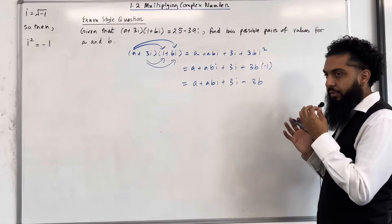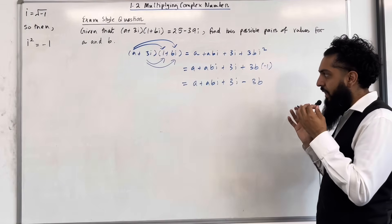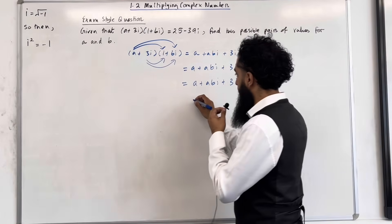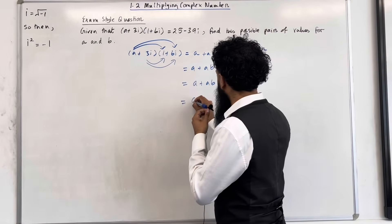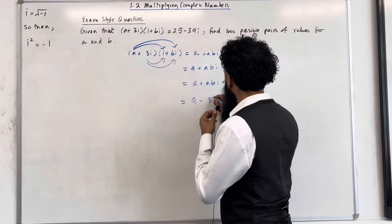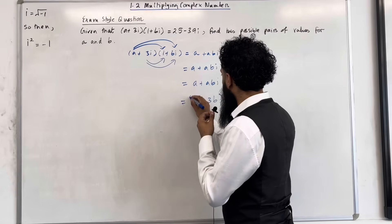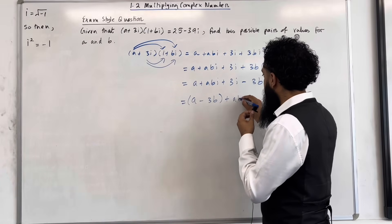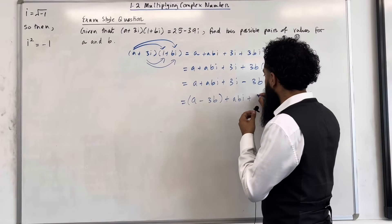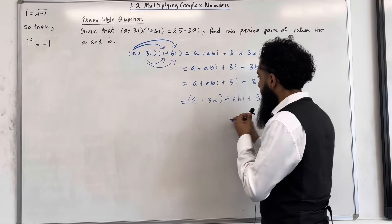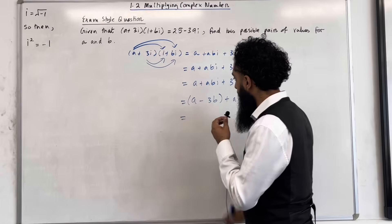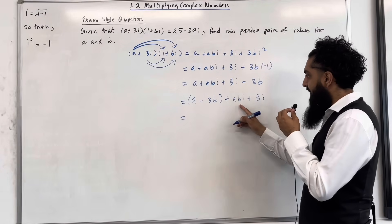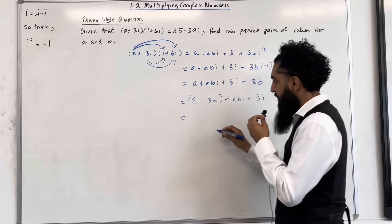So I'm going to collect the real terms and then collect the imaginary terms. I've got (a minus 3b) plus abi plus 3i. Now over here we've got a common factor of i between these two terms.